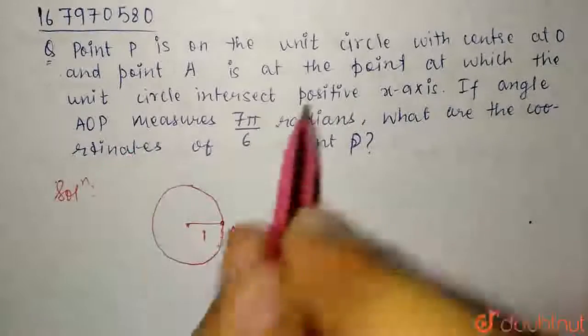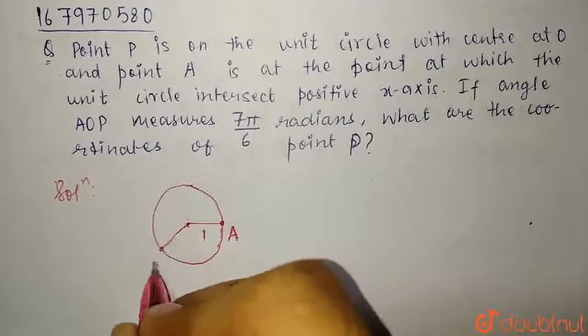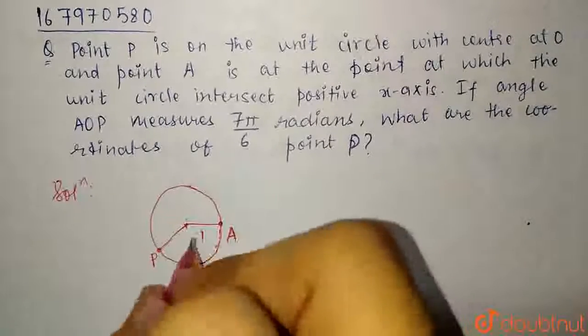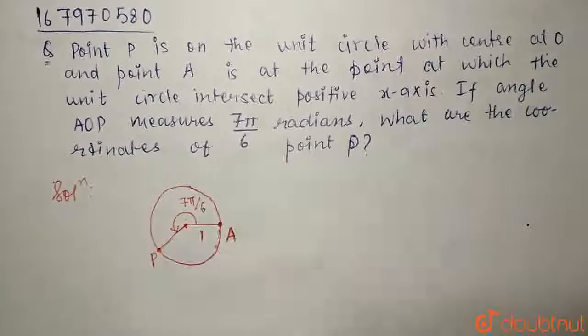And the point P is on the unit circle. We will write point P here because the angle between them is 7 pi by 6.